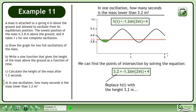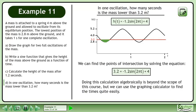Replace h with the height 3.2 meters and solve for the times that make the function evaluate to 3.2. Doing this calculation algebraically is beyond the scope of this course, but we can use the graphing calculator to find the times quite easily.